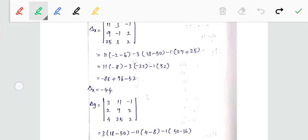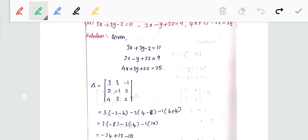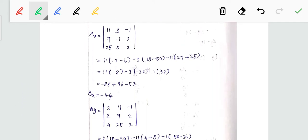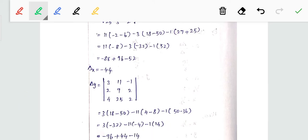Next, del y. Del y: x variable, y variable set to 11, 9, 25. So x is 3, 2, 4; 11, 9, 25; z is minus 1, 2, 2. Now determine: plus 3, corresponding row column.